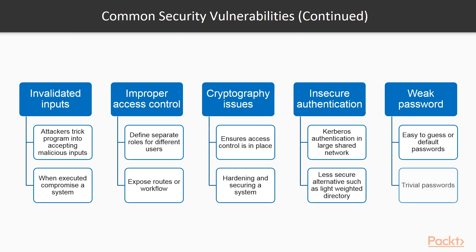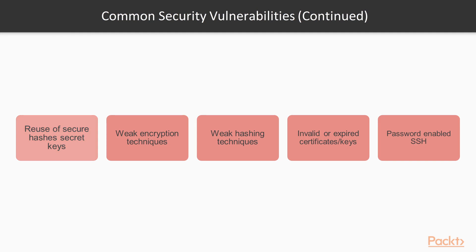The next vulnerability is use of weak passwords — easy to guess, default, or trivial passwords are the bane of many modern web applications. Reuse of secure hashes and secret keys is also a problem — they are usually specific to an application or project and should never be reused across applications; whenever required, generate fresh hashes and keys. Finally, weak encryption techniques, weak hashing techniques, and invalid or expired certificates, keys, or password-enabled SSH are also significant vulnerabilities.